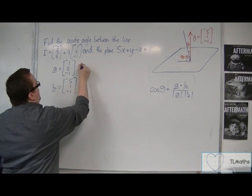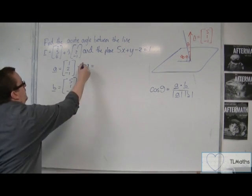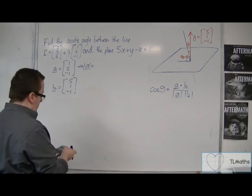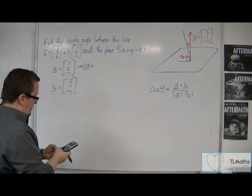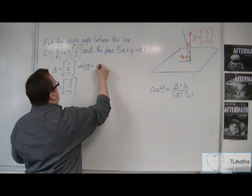So given a, I can work out what mod a is. So we're going to have the square root of 1 squared plus 2 squared plus minus 1 squared. So square root of 6.